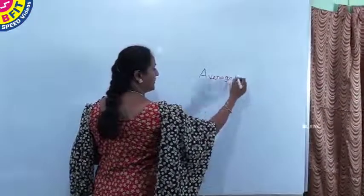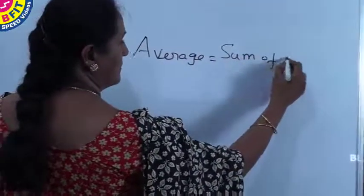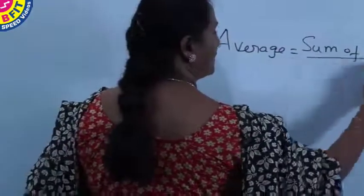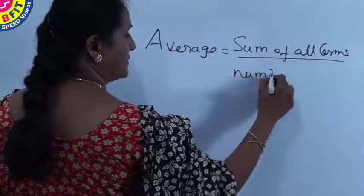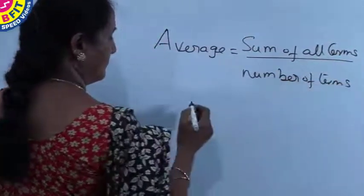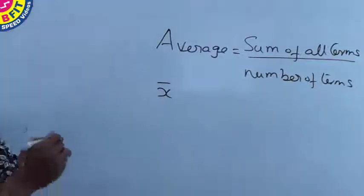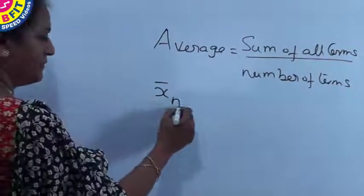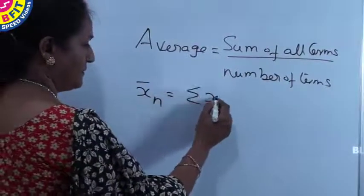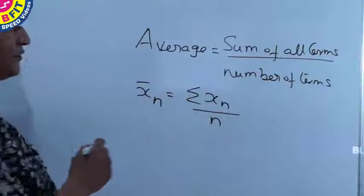Average is obtained by the sum of all terms divided by the number of terms. Average is represented as x-bar, and sigma x sub-n represents the sum of n terms, where n is the number of terms.